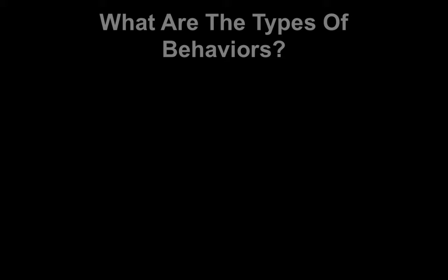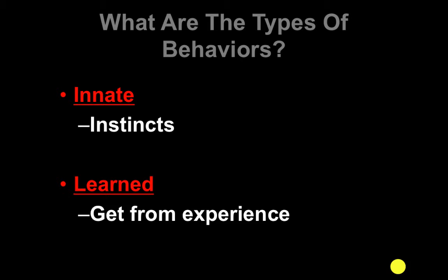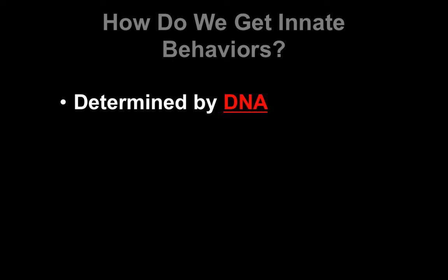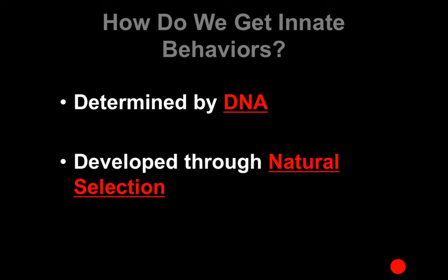Now there are two types of behaviors. One is called innate behaviors — these are instincts, things that you were born already knowing how to do. And then there are learned behaviors, which are ones that you have to get through experience. We get innate behaviors from our DNA. These behaviors are actually coded for by DNA, and as a result, they are also developed through natural selection.